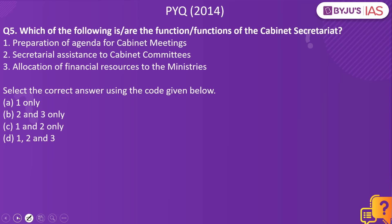Now let's look into the next practice question. Which of the following are the functions of the Cabinet Secretariat? Preparation of agenda for cabinet meetings, secretarial assistance to cabinet committees, allocation of financial resources to the ministries. The answer to this is 1 and 2 only. This happens to be a previous year question from 2014. The Cabinet Secretariat is responsible for the administration of Government of India Transaction of Business Rules 1961 and the Allocation of Business Rules 1961.